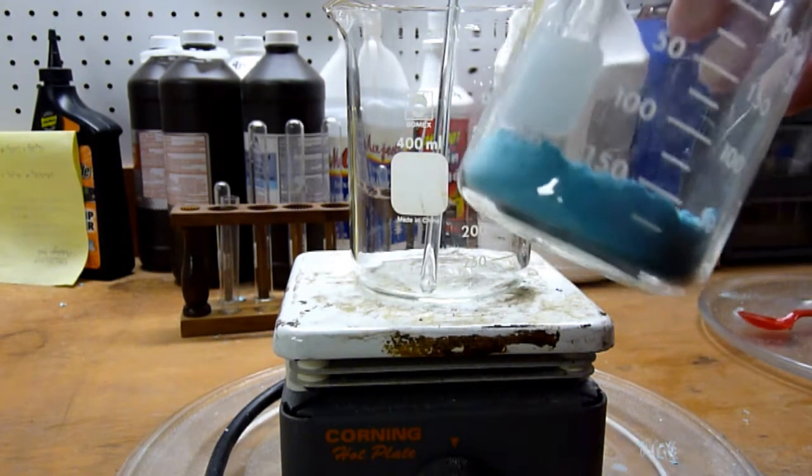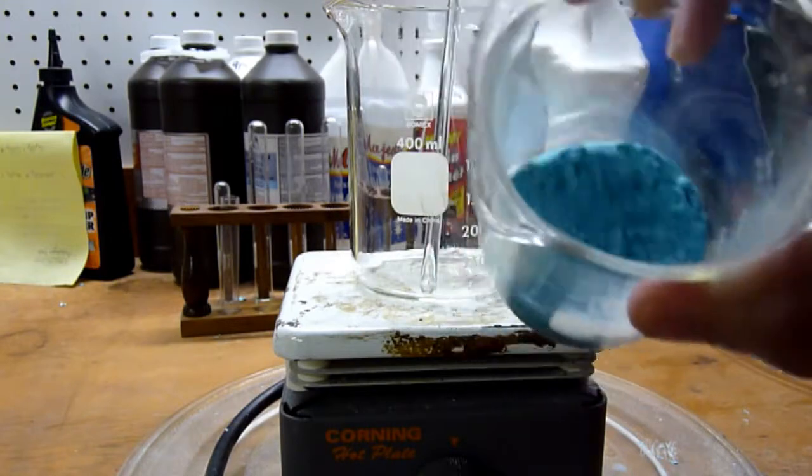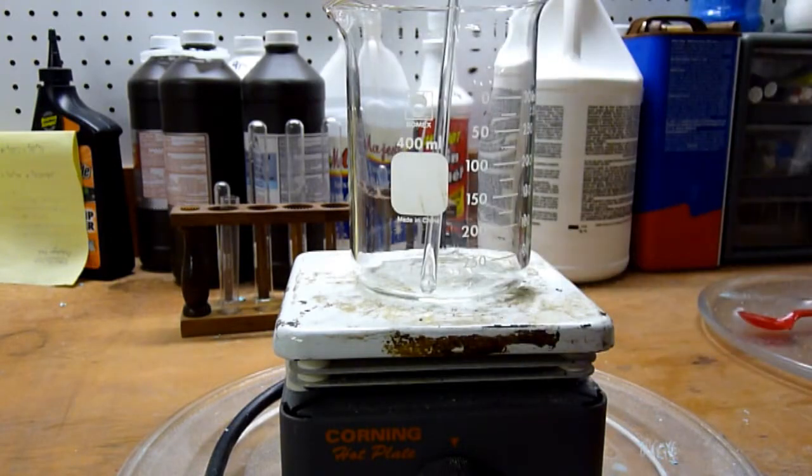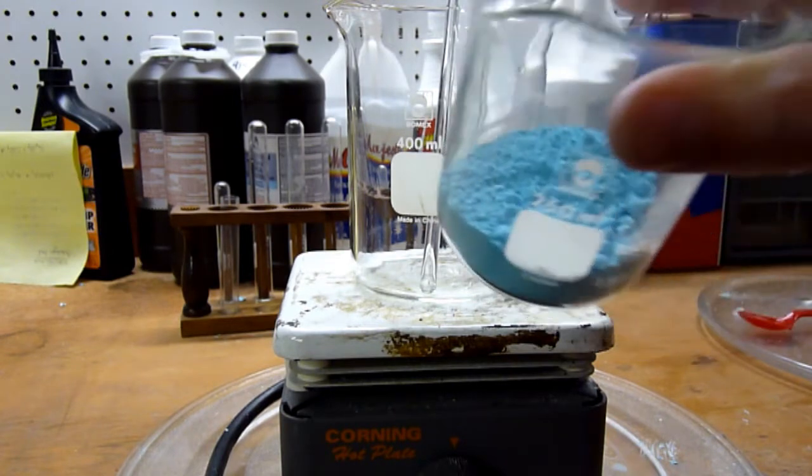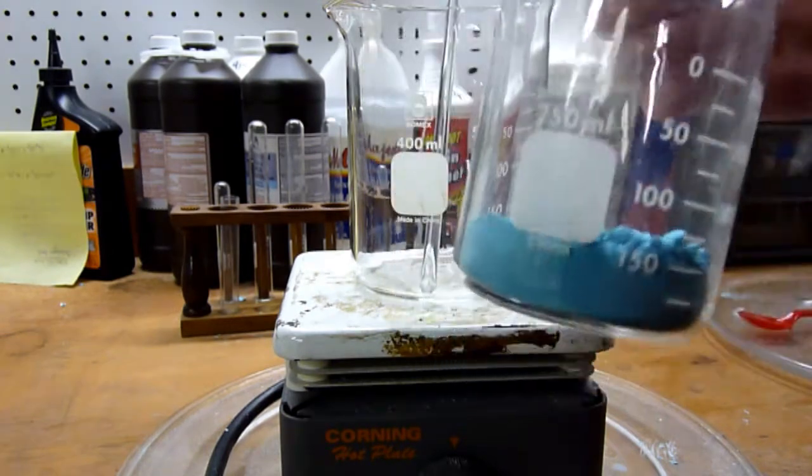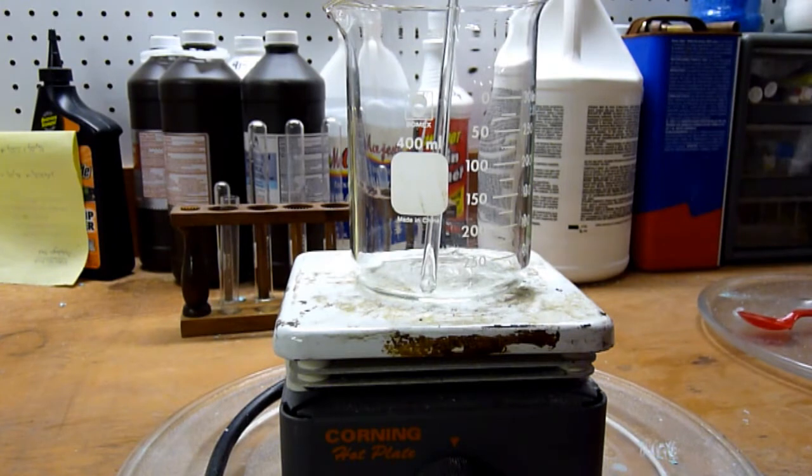Now this is the copper carbonate which we've prepared in a previous video. There are various hydration states of copper carbonate and so it ranges from a pale blue to a dark green sort of color and we'll see that it'll be very apparent as we start heating it.